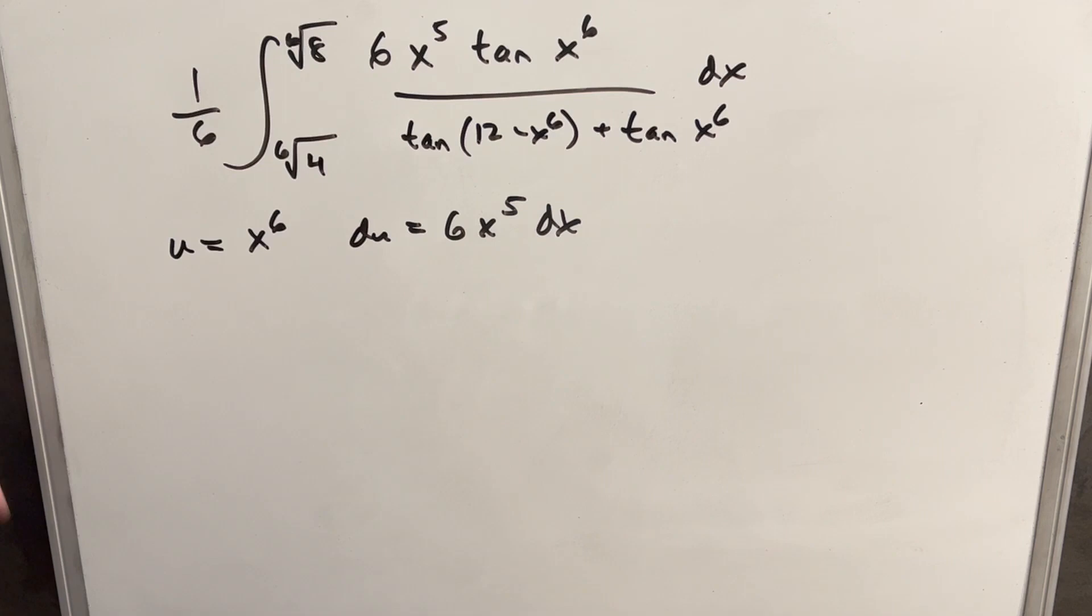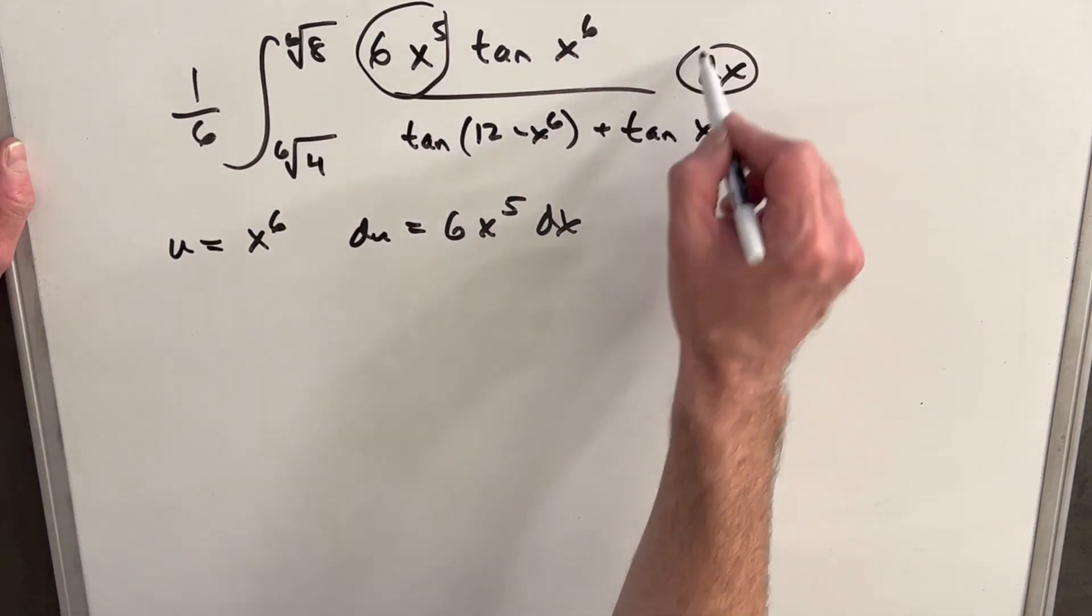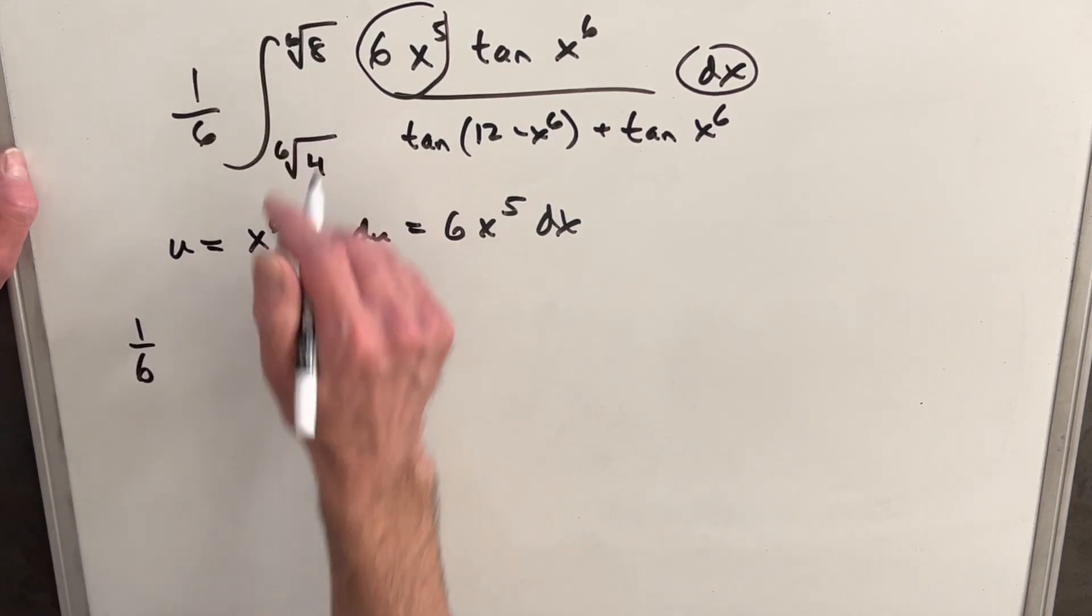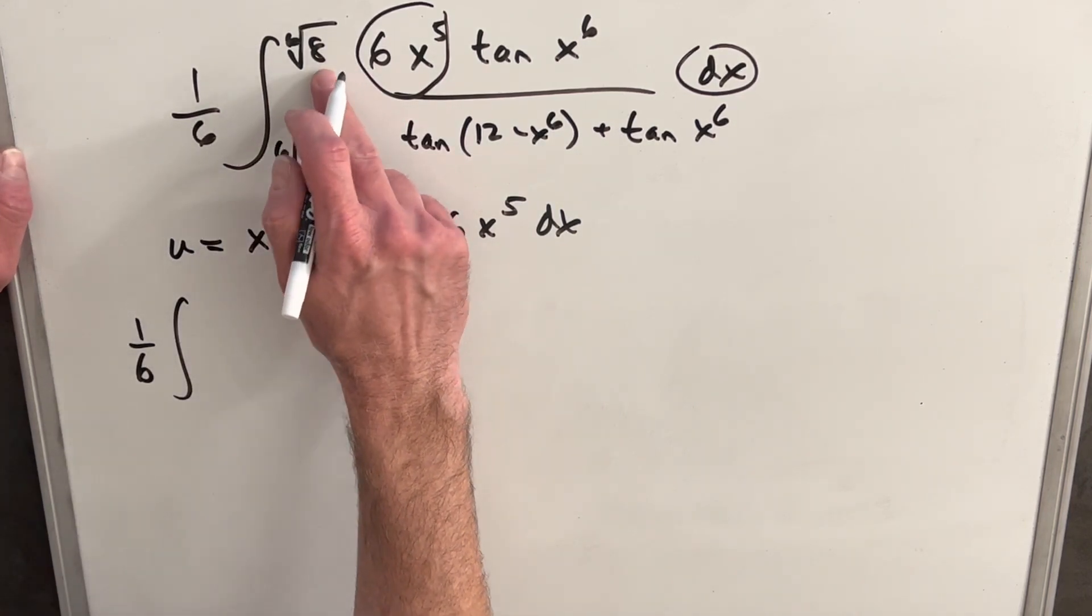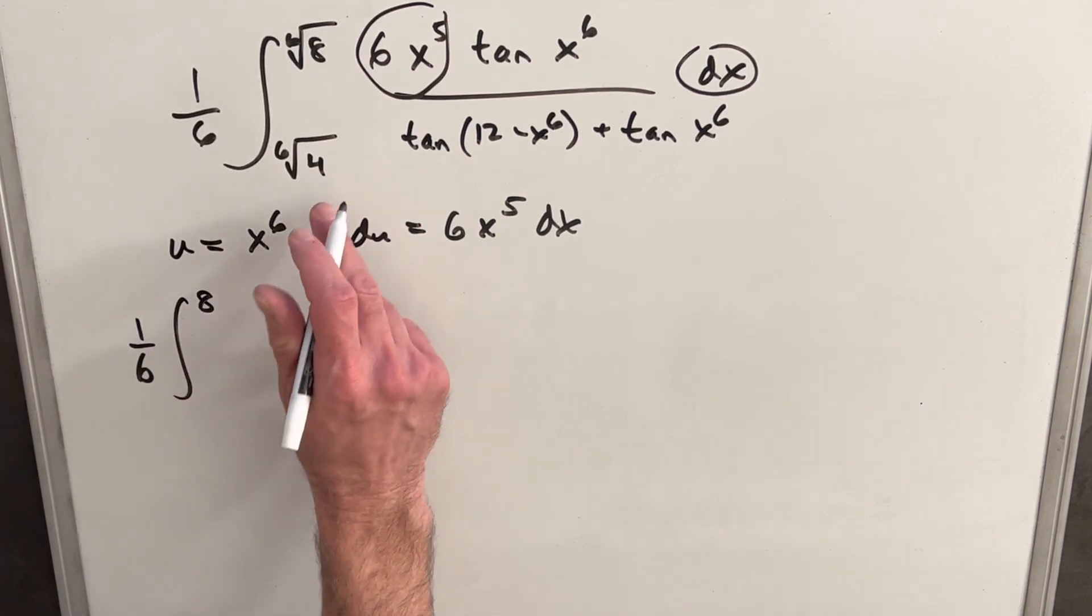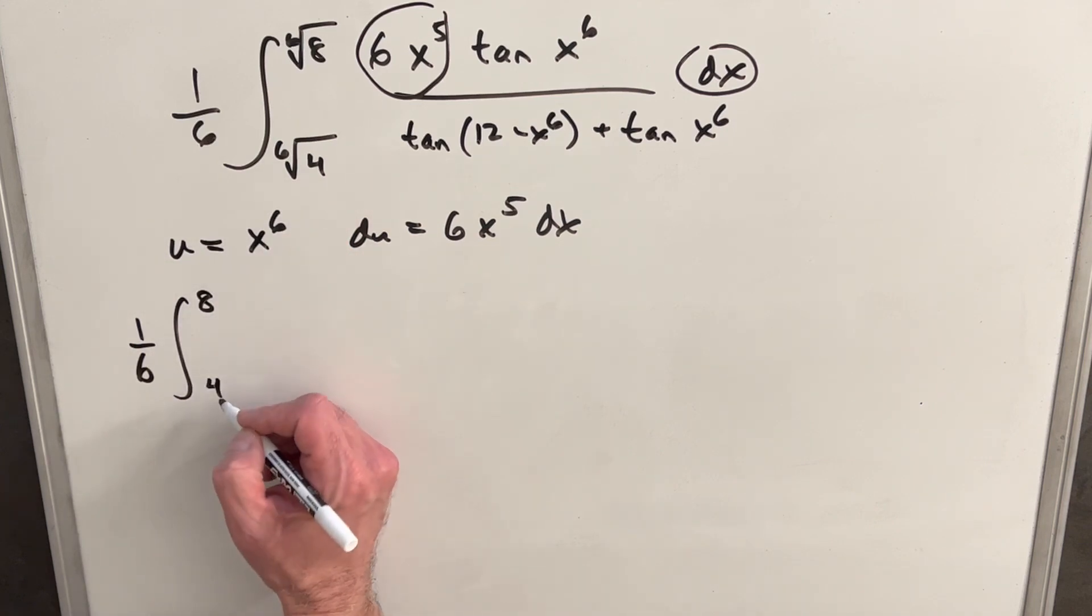So then let's make that substitution, just noticing that this with this is going to be our du. But first we need to change the bounds of integration here. So when we put a 6th root of 8 into x to the sixth, we just get back an 8. And then similarly here, when we put in a 6th root of 4, we just get back a 4.